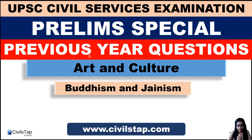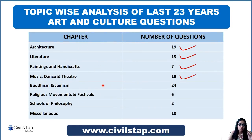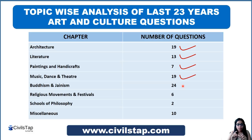Hello everybody, welcome to Civil Step. In our lecture series of Sthapna, we are discussing the subject of Art and Culture, in which we discuss all questions about Art and Culture in UPSC Prelims. We have already covered four topics, and today we are starting a new topic: Buddhism and Jainism, which is the most important topic of Art and Culture. Almost every year, one question comes from this topic, and UPSC asks comparatively difficult questions from this topic, so you have to read it very carefully.